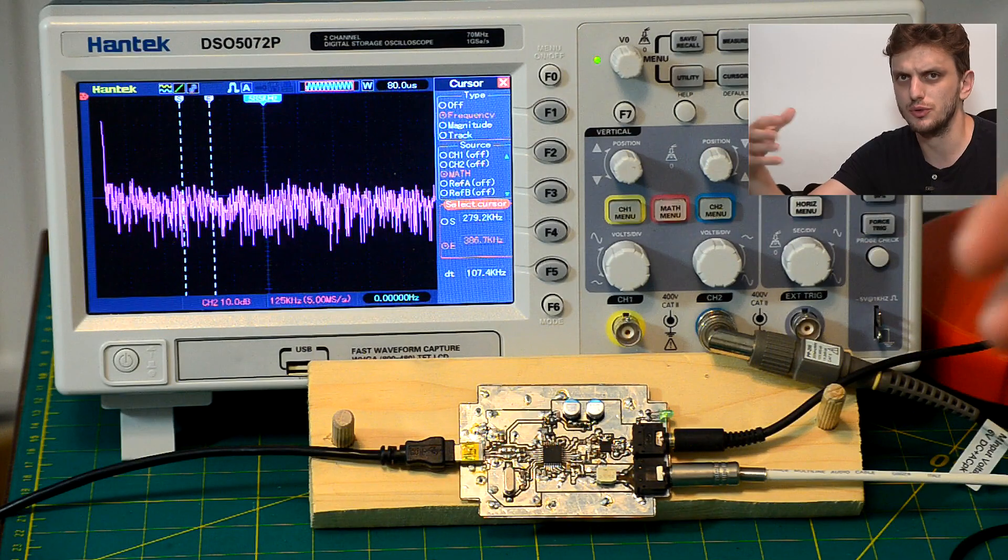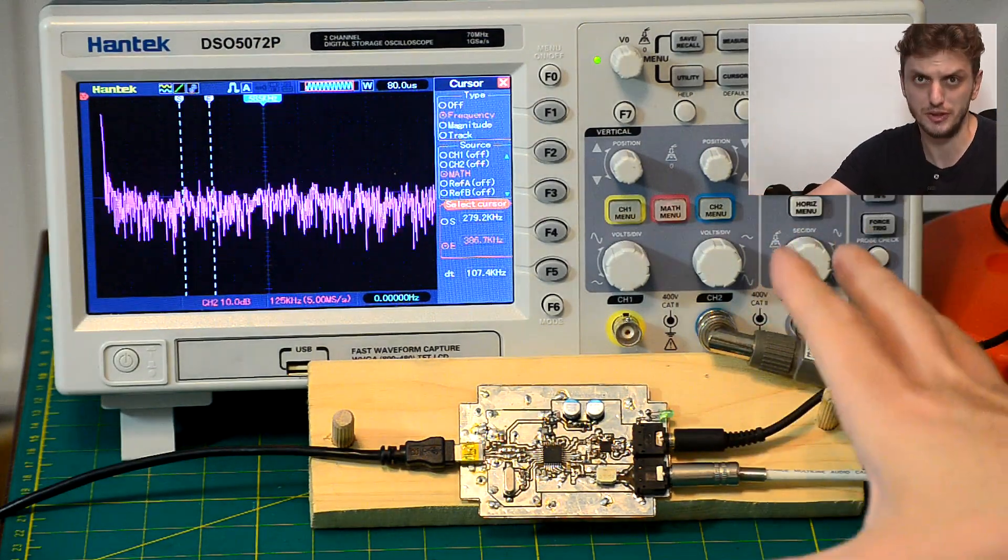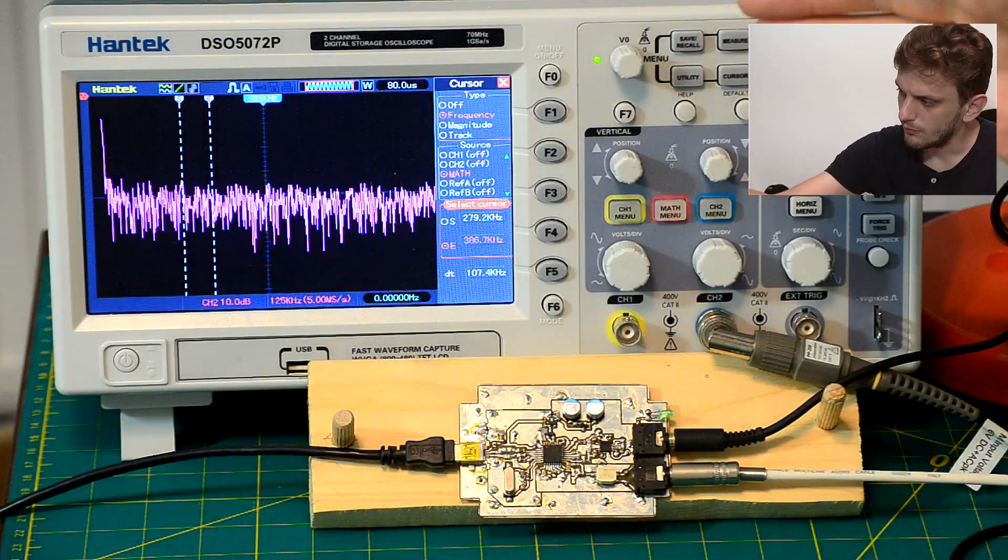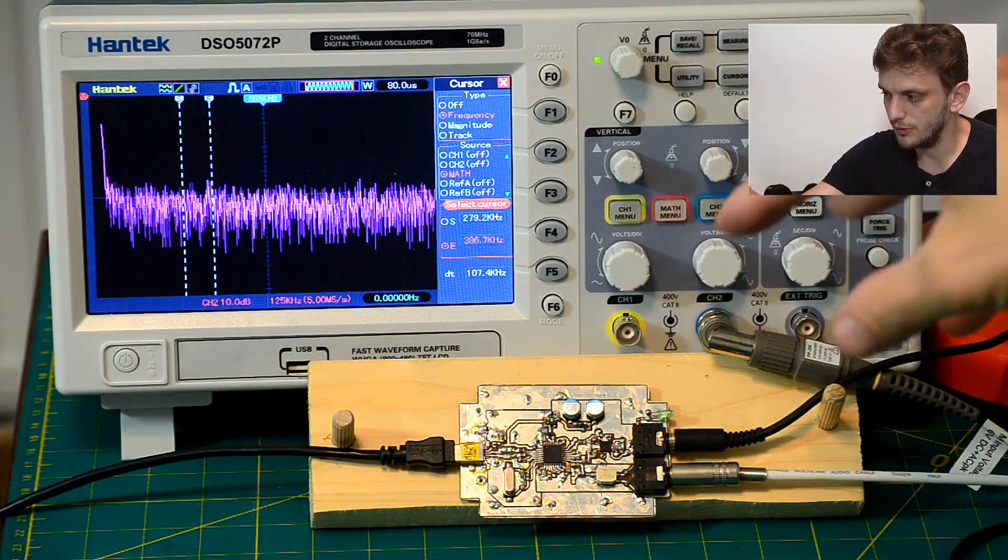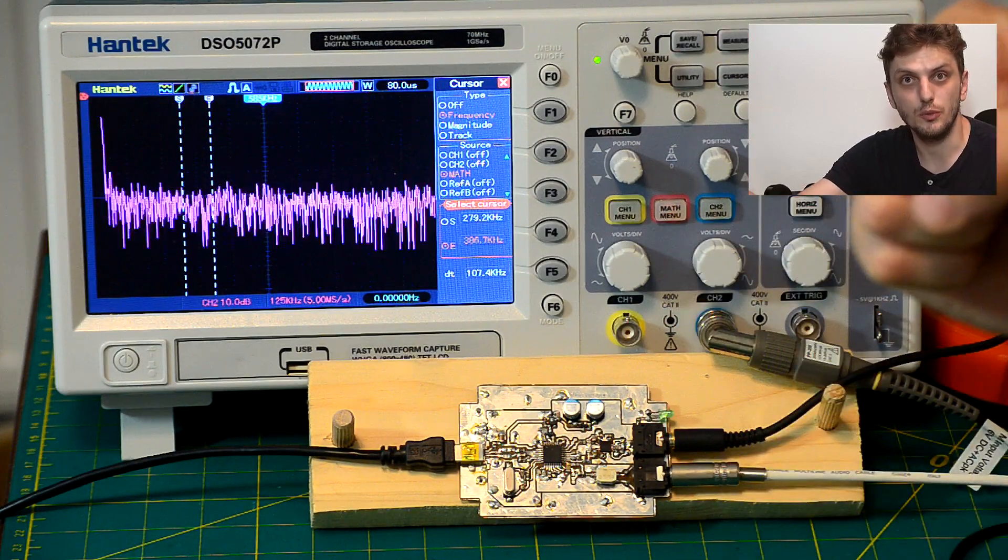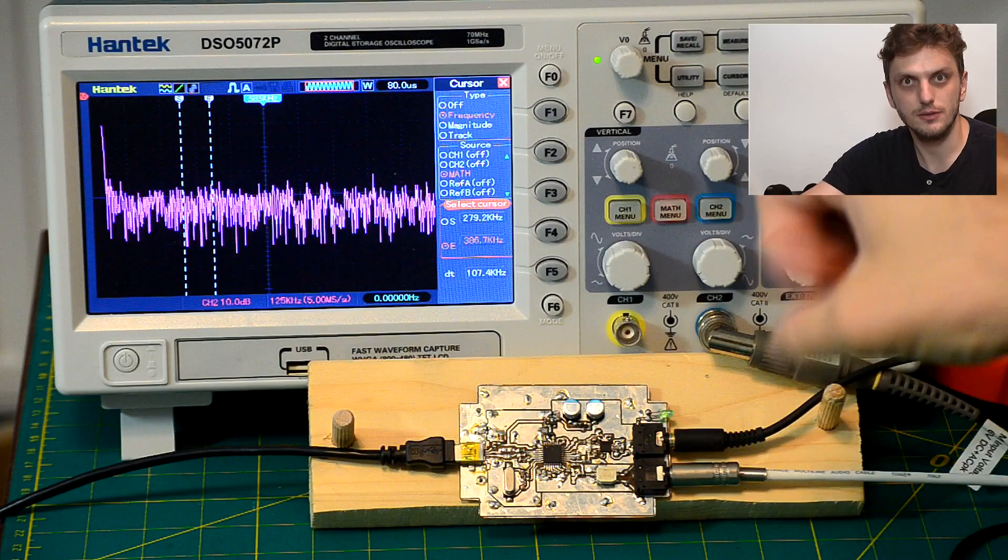So if you hear some sort of cracks or noises during this recording it's probably because I touched something I shouldn't have. Anyway, I set the oscilloscope to FFT mode so we can see whatever we're probing in a frequency domain. So we can see the actual frequencies that are present in the circuit.